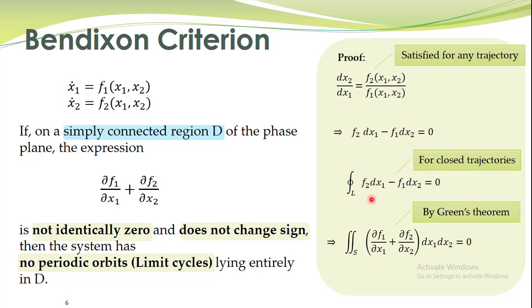By Green's theorem, this line integral equals zero means the corresponding surface integral is also zero. This surface integral can be equal to zero if the expression inside is identically equal to zero, or if that expression changes sign. If these two conditions are not satisfied — that is, if the expression is not identically zero and also does not change sign — then this integral cannot equal zero.